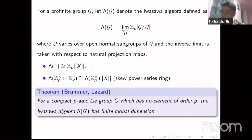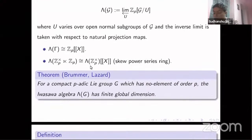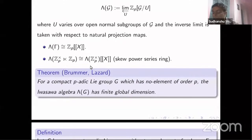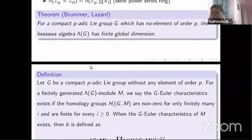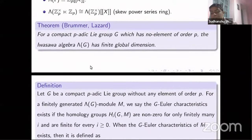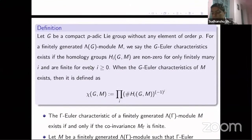Other examples include GL_n(Z_p) itself. There is an important theorem which is the basis of what we do next: for a compact p-adic Lie group G which has no element of order p, the Iwasawa algebra lambda(G) has finite global dimension. This means group homologies vanish after a stage depending on the dimension of G. This is a very important fact which we need even to define the Euler characteristic.